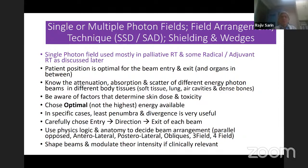When deciding patient position, you have to decide what your likely beam arrangement will be. You should know the attenuation, absorption, and scatter of different energy photon beams in different body tissues — soft tissues, lung, air cavities, and dense bones. Sometimes you have a metal implant. You should be aware of how it will attenuate the beam and how it will absorb the beam.